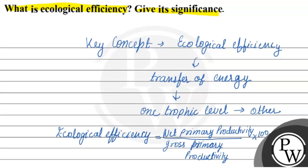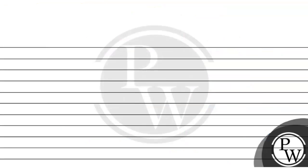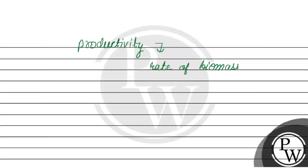That is known as ecological productivity efficiency. If we discuss the term productivity used in the formula, productivity is the rate of biomass production.